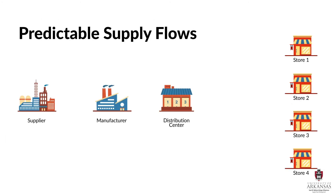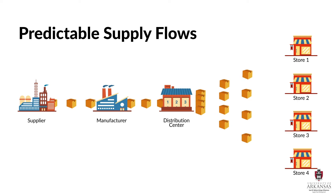To illustrate the concept of risk hedging, let's think about predictable supply flows in a basic supply chain. Raw materials or sub-assemblies move from suppliers to manufacturers. The manufacturers then convert these unfinished goods into finished products. These products are moved to a distribution center, where they are then sent to multiple retail locations for consumers to purchase. This basic supply chain works fine as long as all sources of supply keep flowing throughout the supply chain.